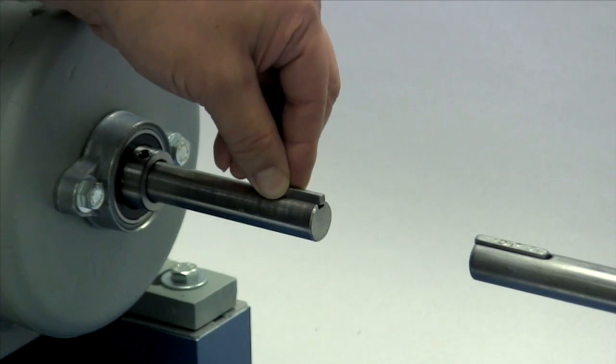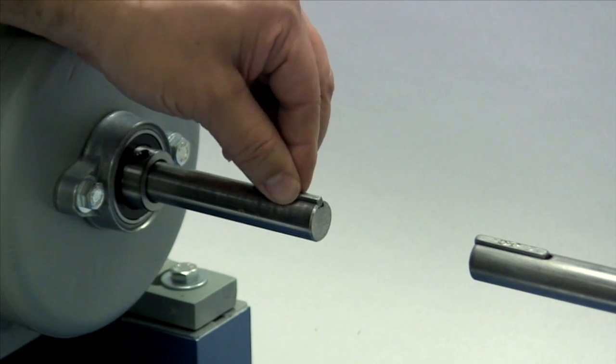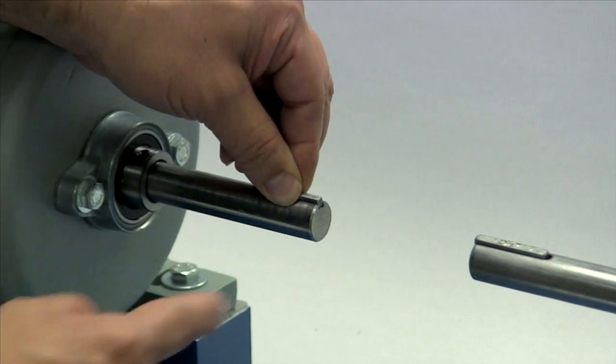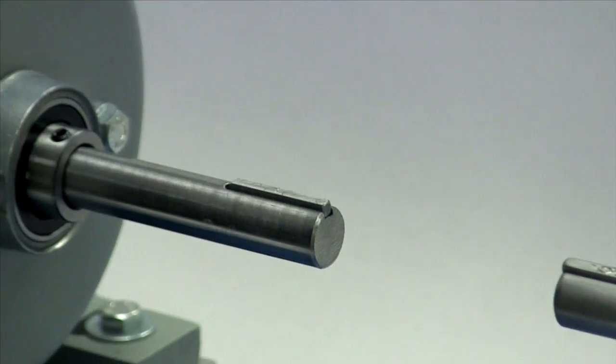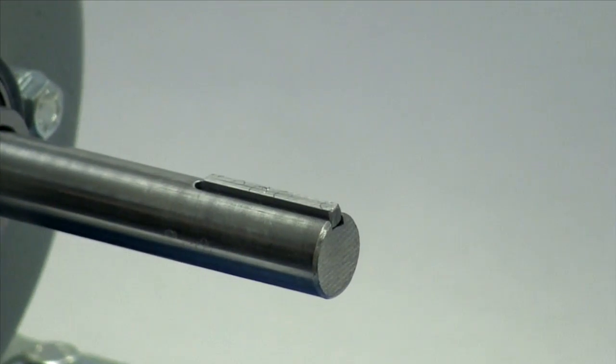Place the key in the keyway on the shaft. The key should fit snugly in the keyway with no side-to-side movement. The end of the key should line up with the end of the shaft and the hub once the hub is installed.